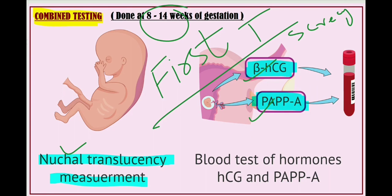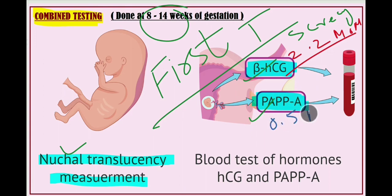Beta-HCG normally is 2.2 multiples of median, and it is increased in case of Down syndrome. PAPP-A normally is 0.5 multiples of median, and it is decreased in case of Down syndrome. You can remember this because the strength of PAPP-A decreases with age and the strength of beta-HCG increases with age.